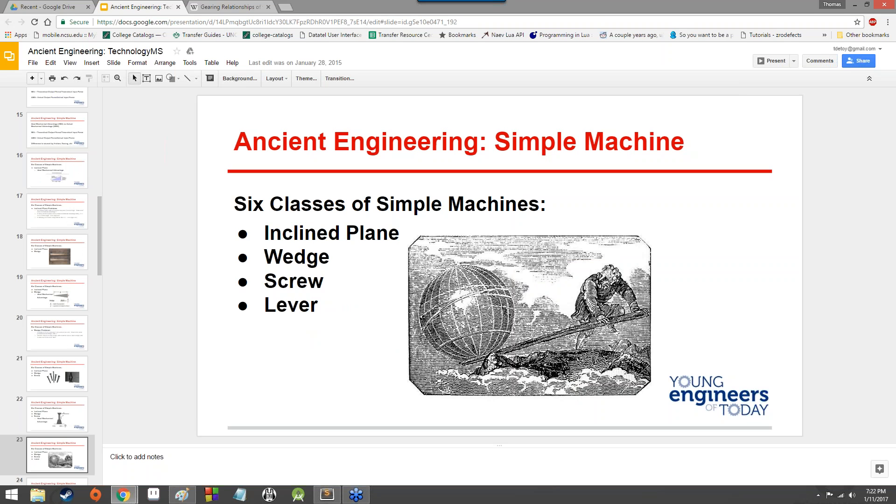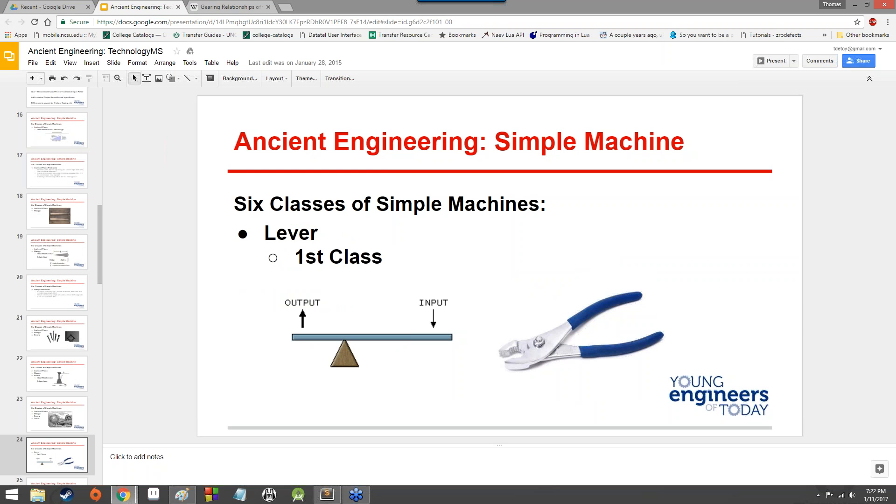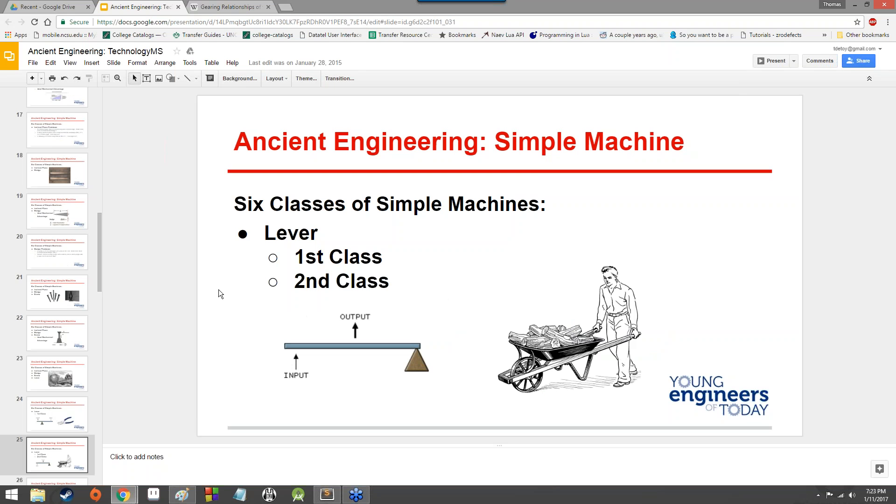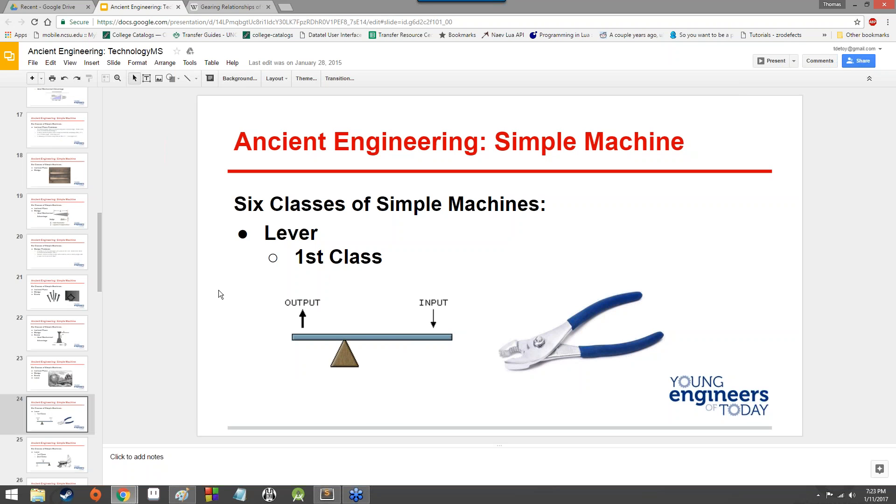Then you got the lever, which allows you to basically use a fulcrum point in order to lift up something heavier than you normally would be able to. You got the first class lever where the fulcrum point is closer to the output than it is to the input, so something like a pair of pliers, in which case you'd get a great amount of force on the output versus the input. But you have a more limited movement on the output side. You can multiply the force from input to output.